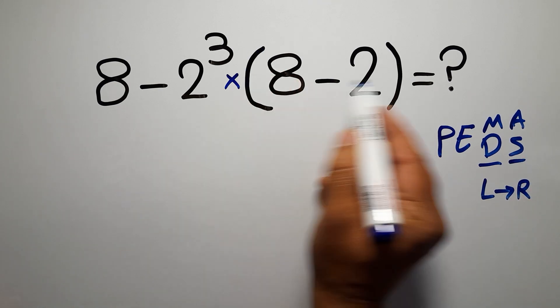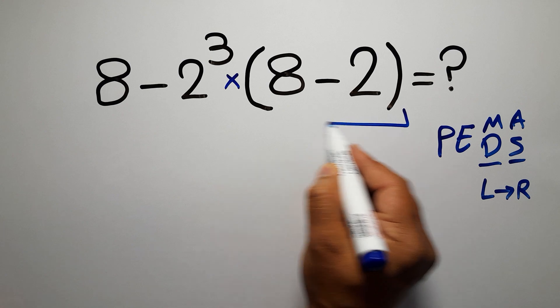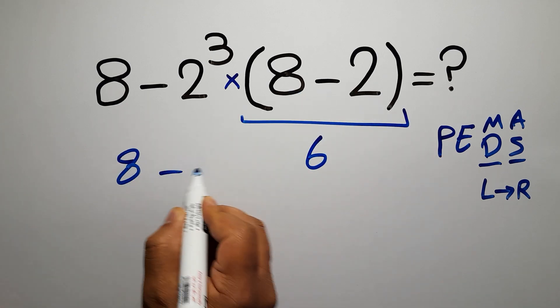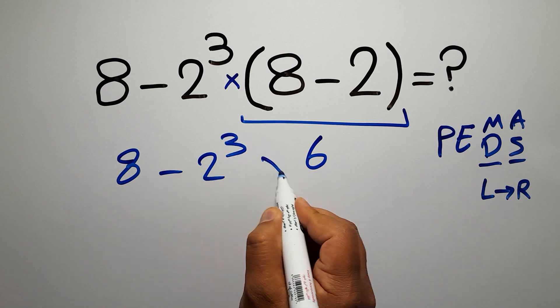So here first we have to do this parentheses. Inside these parentheses we have 8 minus 2 which equals 6. So 8 minus 2 cubed times 6.